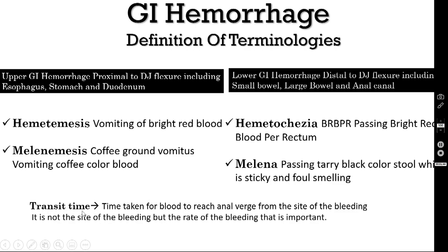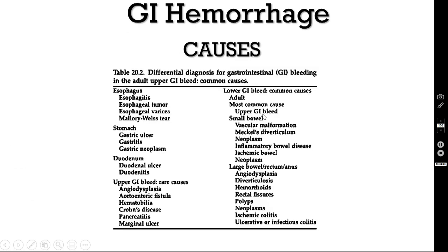Another terminology you must know is transit time — the time taken for blood to reach the anal verge from the site of bleeding. It is not just the site of bleeding, but the rate of bleeding that is important. The commonest cause for lower GI bleeding is actually upper GI bleed. If the bleeding is very rapid and transit time is short, a bleeding duodenal ulcer can present as lower GI hemorrhage.